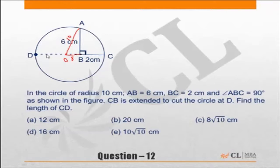And if 8 and 2, this is also 10, that means this is actually OC, or CD is the diameter of the circle. And the radius is 10, then the CD is going to be 20 centimeter.